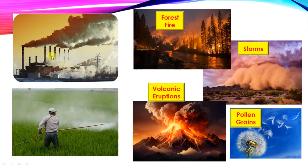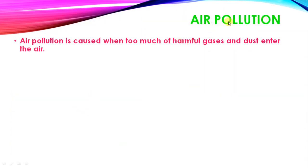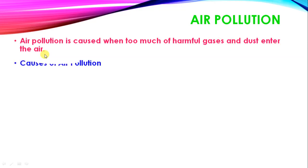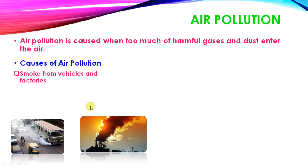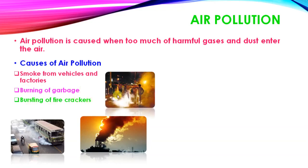Human-caused pollution includes smoke from factories, use of pesticides in fields, smoke from vehicles, burning of garbage, bursting of crackers, and cutting of trees. All these are causes of air pollution. Air pollution is caused when too much of harmful gases and dust enter the air.